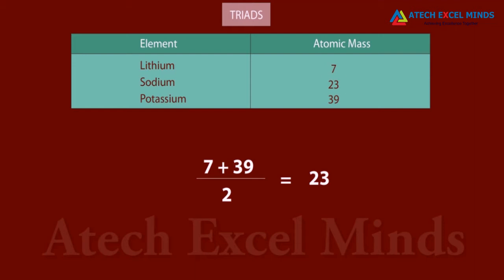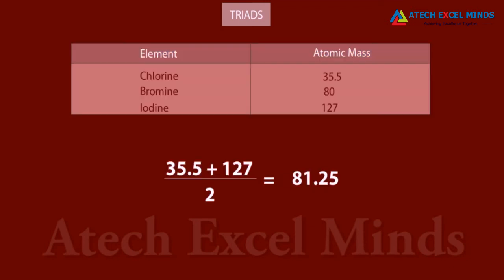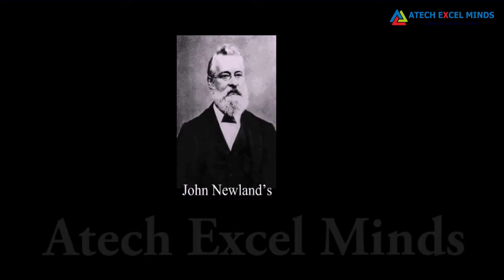In the triad calcium, strontium, and barium, the atomic weight of the middle element strontium is very close to the average of the atomic weights of barium and calcium. The elements chlorine, bromine, and iodine formed another triad. However, Dobereiner could identify only three triads from the known elements, and hence this system was not found to be useful.